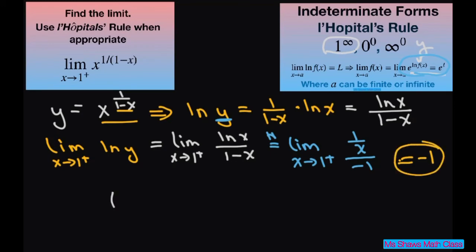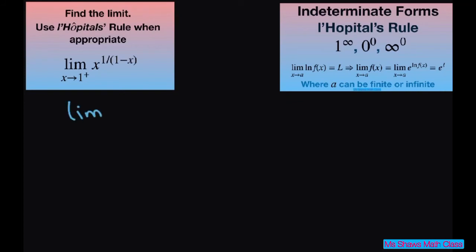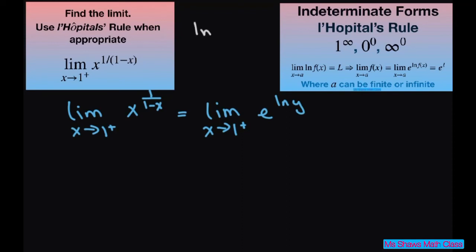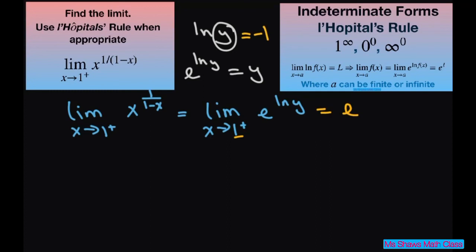Remember, this negative 1 is the limit as x approaches 1 from the right of ln of y equals negative 1. Now we're going to write this as the limit as x approaches 1 from the right of x to the power of 1 divided by 1 minus x, equals the limit as x approaches 1 from the right of e to the power of ln of y. We have the answer for ln of y, but we need y. Writing e to the power of ln of y just equals y. So using our substitution, this is going to be e to the power of negative 1, which equals 1 divided by e. And that is your final answer.